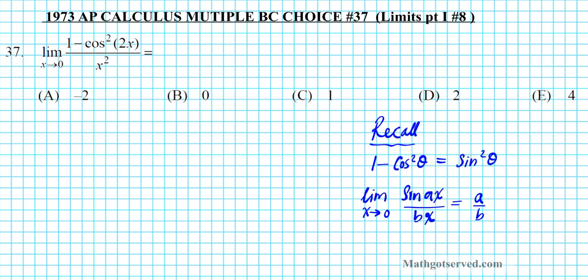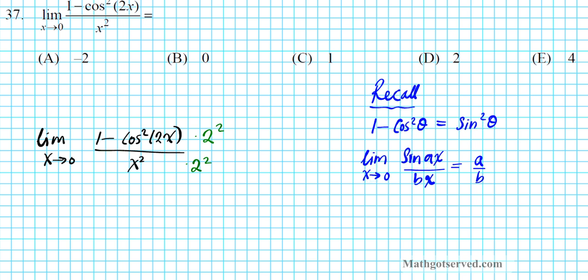All right so let's go ahead and start working on the problem. So we have the limit as x approaches 0 of 1 minus cosine squared 2x over x squared. Now first thing you want to note is that the argument of the cosine function is 2x. So I want to make the denominator identical to this argument here so what I'll do is multiply the numerator and the denominator by 2 squared. Now we can factor out this 2 squared to the front so we have 4 times the limit as x approaches 0.